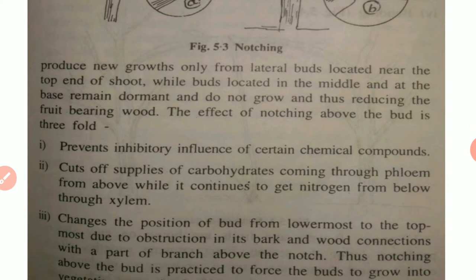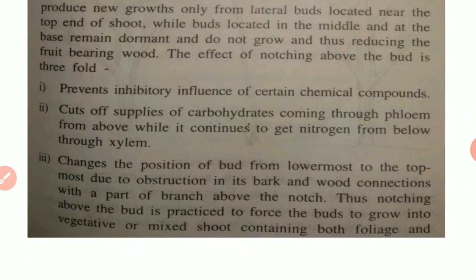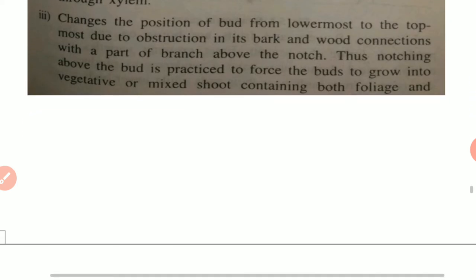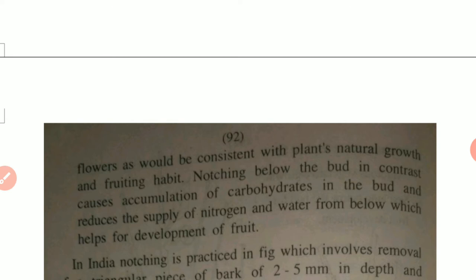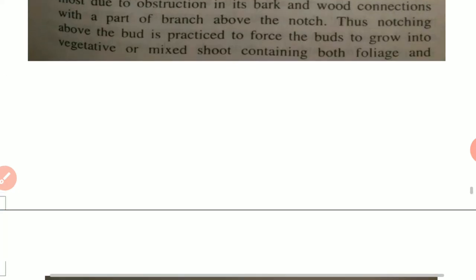The effect of notching above the bud is threefold: it prevents the inhibitory influence of certain chemical compounds; it cuts off supplies of carbohydrates coming through the phloem from above while continuing to get nitrogen from below through xylem; and it changes the position of the bud from lowermost to topmost due to obstruction in its bark and wood connections with the part of branch above the notch. Thus notching above the bud is practiced to force buds to grow into vegetative or mixed shoots containing both foliage and flowers. Notching below the bud causes accumulation of carbohydrates in the bud and reduces supply of nitrogen and water from below, which helps fruit development.